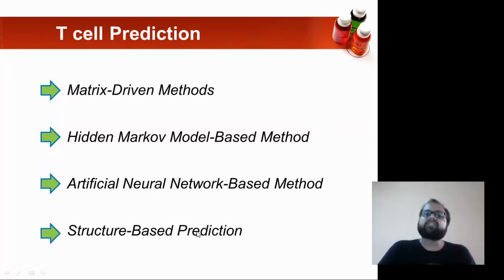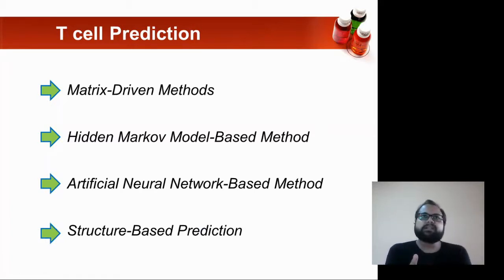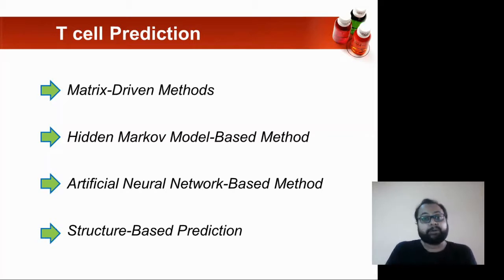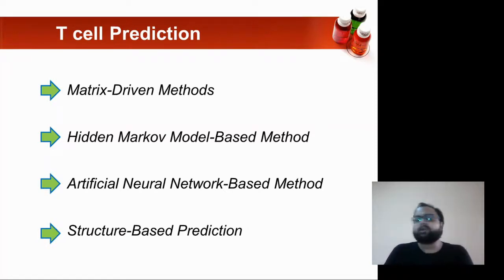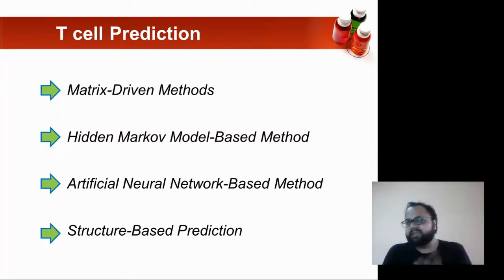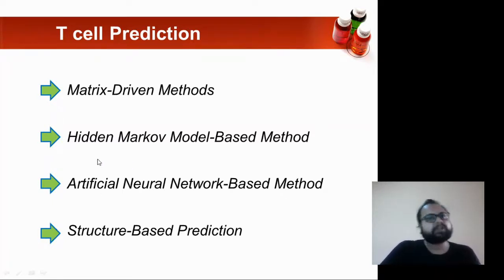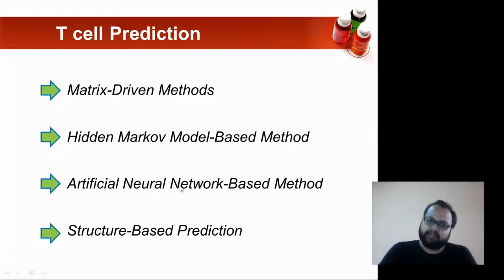The next one is the structure-based prediction method. In this method, it already has predicted three-dimensional structures of various MHC binding proteins, and based on these it predicts your T-cell epitope. This is somewhat similar to homology modeling, but in this case it uses pre-predicted 3D structures of MHC proteins. These are the four T-cell epitope prediction methods: matrix-driven, hidden Markov model (HMM), artificial neural network (ANN), and structure-based.